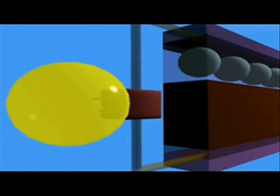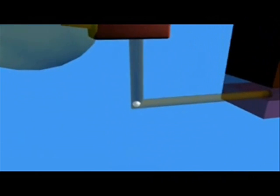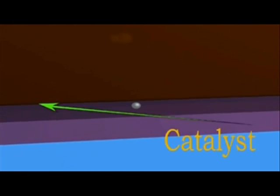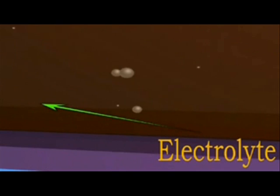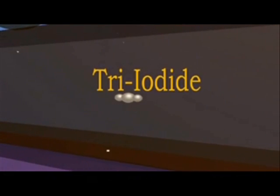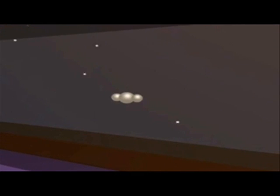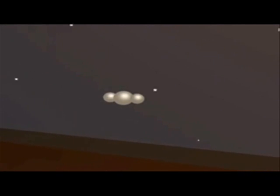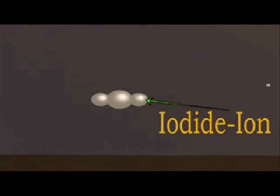The electron does its work and returns to the cell via the bottom conductive layer. With the help of a catalyst layer, the electron enters the electrolyte and interacts with a tri-iodide molecule. Along with another electron, this reduces it to an iodide ion.